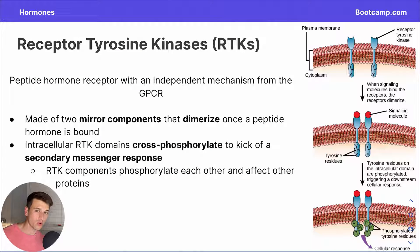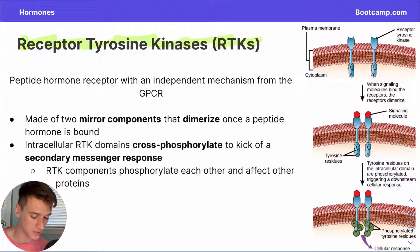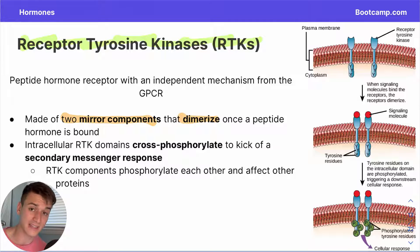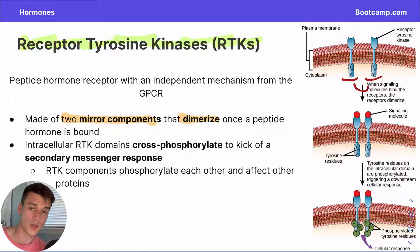Now let's discuss the other mode of signal transduction: the mode that uses receptor tyrosine kinases as the ligand-gated receptor. Receptor tyrosine kinases, or RTKs, are interesting because they're composed of two identical components that dimerize once bound by the appropriate ligand and activated. You can think of this simply as two siblings holding hands — the dimerization means they come together and interact.